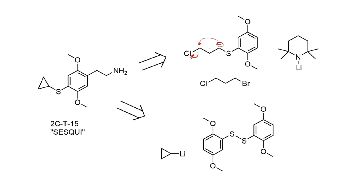There's another neat way to access 2CT15 by reversing the disulfide chemistry: rather than using a dialkyl disulfide, Shulgin took the thiophenol intermediate, oxidised it with hydrogen peroxide to the disulfide, and reacted it with cyclopropyllithium. It's a little wasteful since only half of the precursor is converted to the useful product, but it's an interesting reversal of the usual approach.